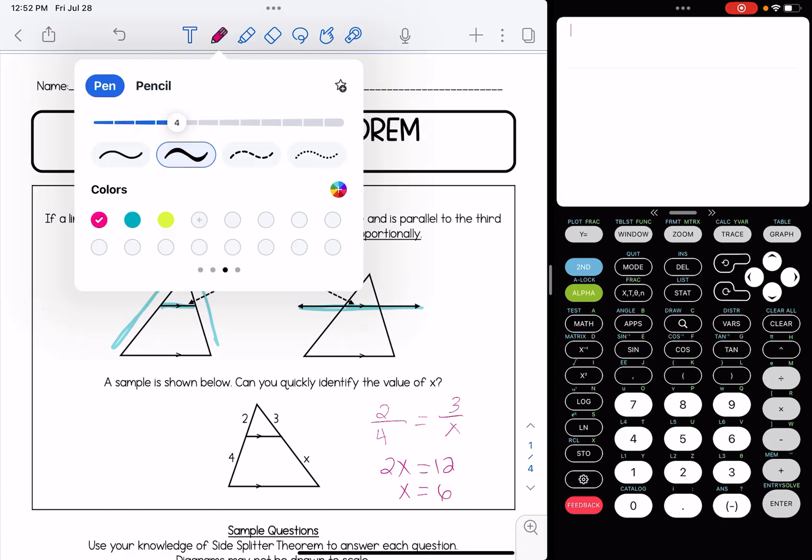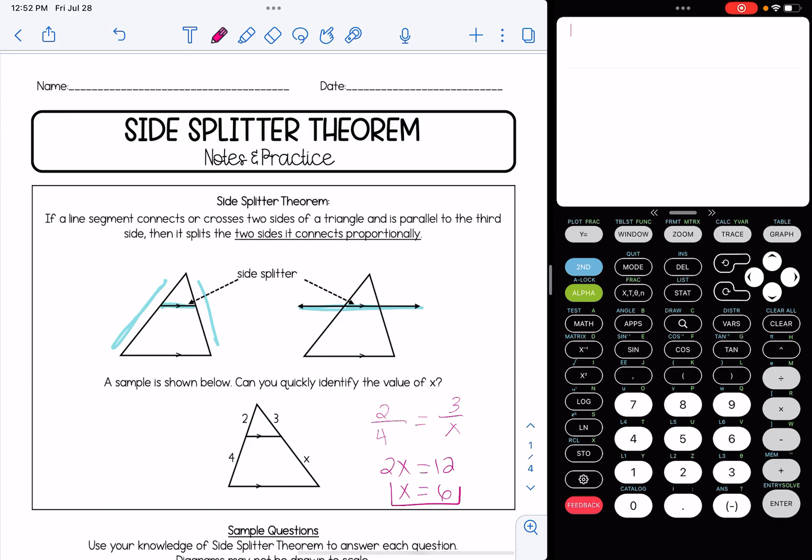When we cross multiply, we get 2X equals 12, or X is equal to 6. So we're able to quickly find the value of X by setting up a proportion. We could have also found the value of X even quicker by looking for a pattern. Ratios are often recognized as patterns. You may have noticed that 2 and 4 indicates a pattern that's times 2, and if I do that pattern over here, I will get that same answer of X equals 6.